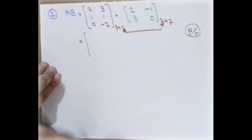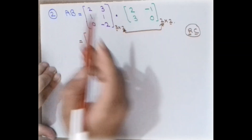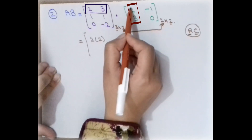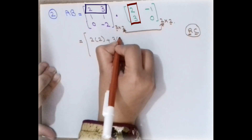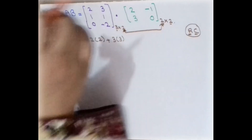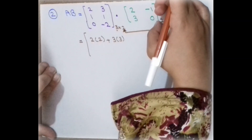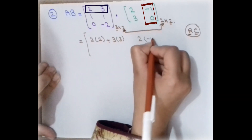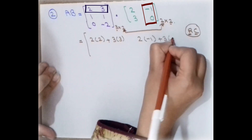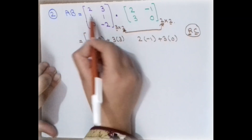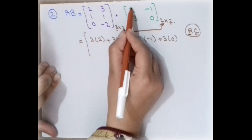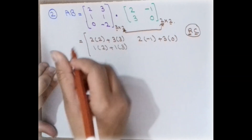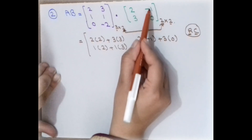Taking the first row with the first column: 2×2 plus 3×3. Then fix this row and move to the next column: 2×1 plus 3×0. Moving to the next row, multiply with the first column: 1×2 plus 1×3. Then fix this row and move to the next column: continue the RC pattern.